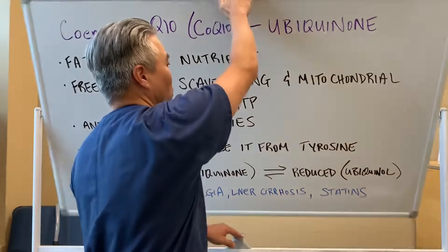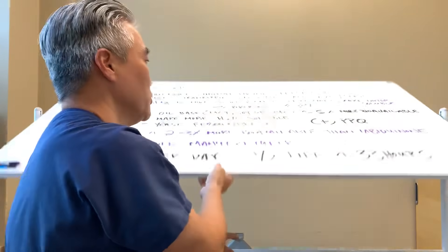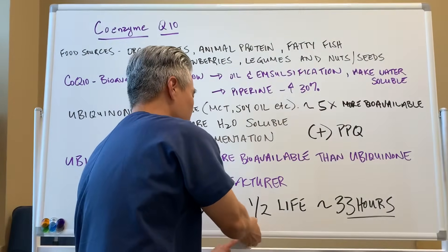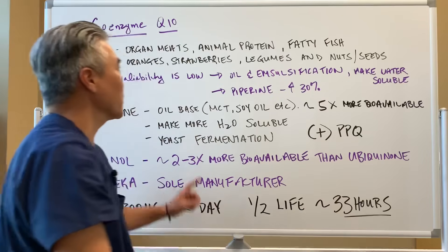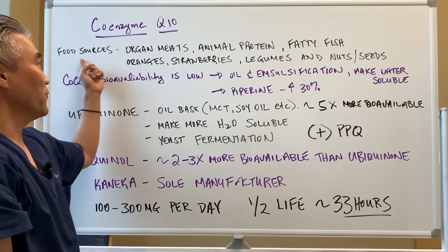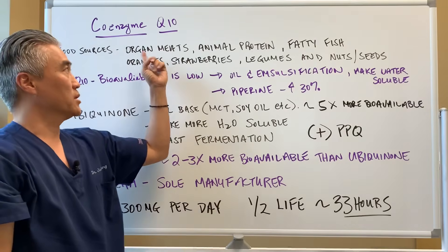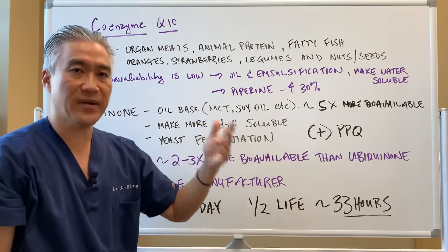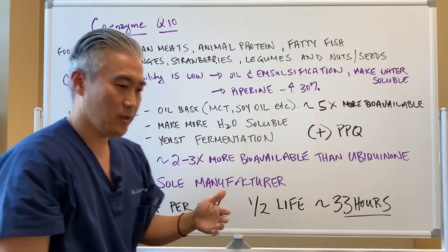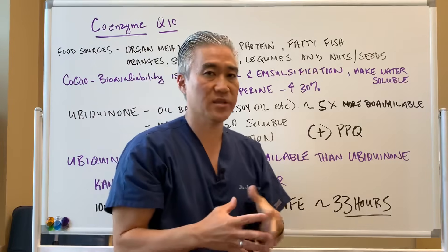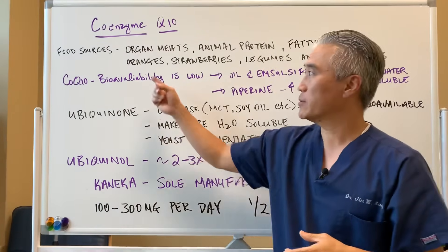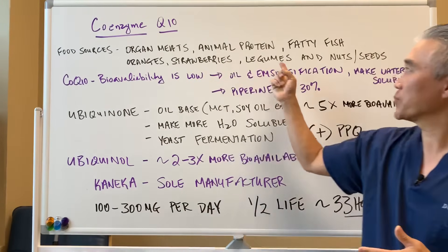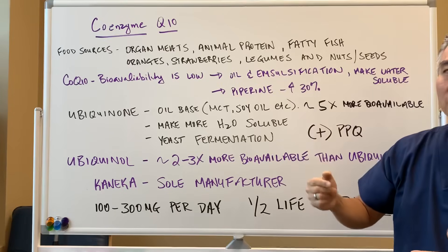Let's get into what types of foods we would utilize. Food sources include organ meats, animal proteins, and fatty fish — they have the highest levels — followed by oranges, strawberries, legumes, nuts, and seeds.